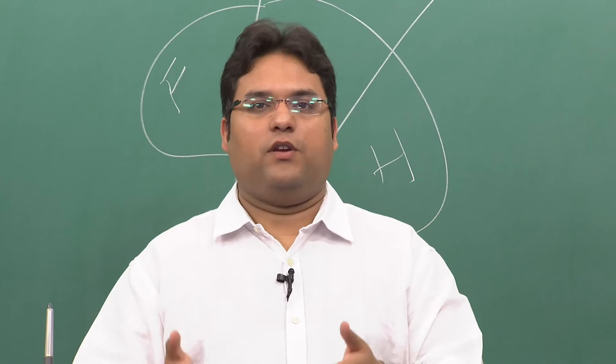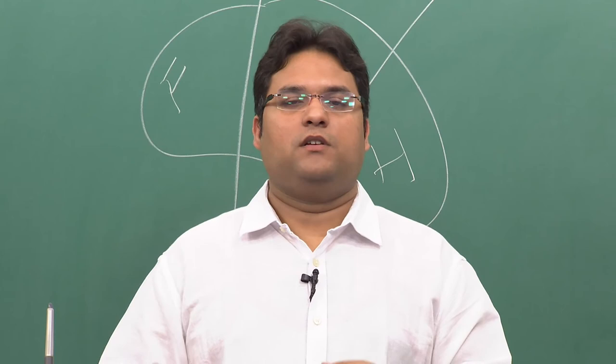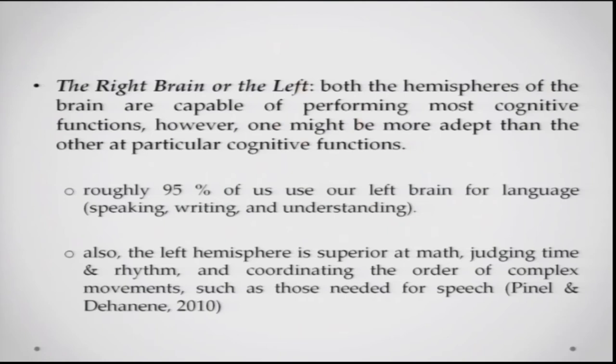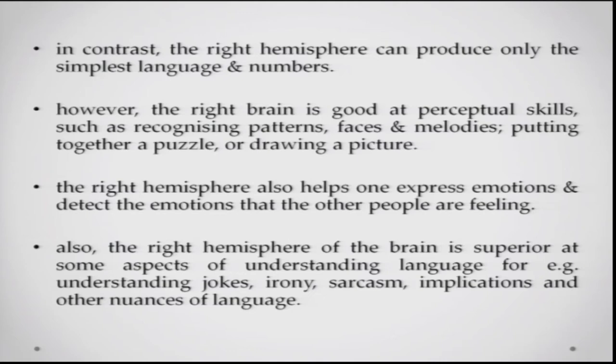Roughly 95 percent of people use the left brain for language — speaking, writing, and understanding. The left hemisphere is also superior at abilities like maths, judging time and rhythm, and coordinating the order of complex movements, such as highly dexterous tasks involving fine motor movements. In contrast, the right hemisphere can produce only the simplest language and numbers, but is better at perceptual skills: recognizing patterns, recognizing faces, understanding music, and drawing.